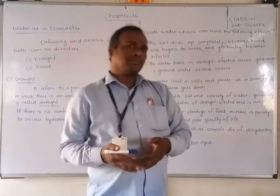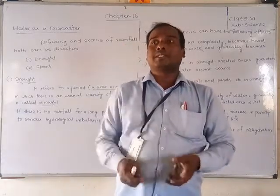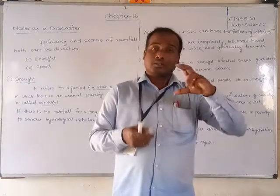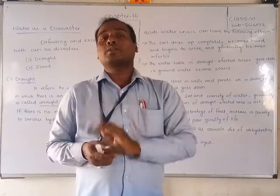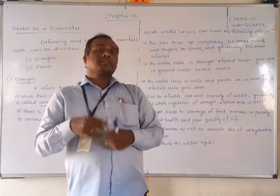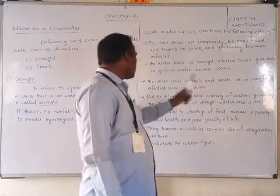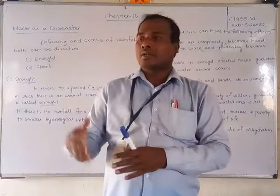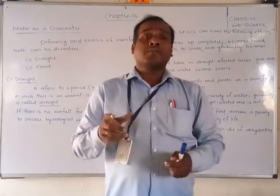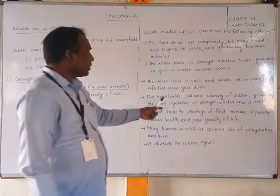The water level drops in the drought-affected area and groundwater becomes scarce. There is a layer of water under the ground. When there is no rain, water cannot sink into the ground, so the water table goes down. In the drought-affected area, people won't get underground water either. The water level in wells and ponds goes down because the water table has dropped.